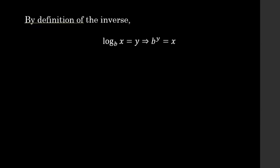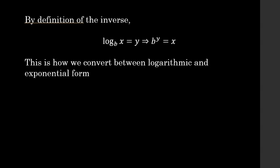By definition of the inverse, log base b of x equals y implies that b raised to the power y is equal to x. This is how we switch or convert between logarithmic and exponential form. The base of your log becomes the base of your exponent, and then these other two quantities switch sides of the equal sign. y, that was all by itself on the right, now becomes the exponent on that base b, and x goes to the right-hand side on its own.